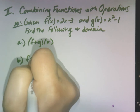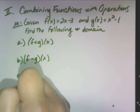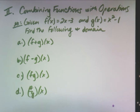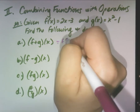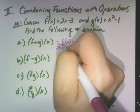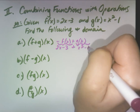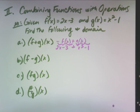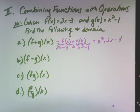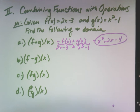For (f + g)(x), you just take f(x) plus g(x). So you take 2x − 3 and add it to x² − 1, then clean it up in logical mathematical order — exponents first. That gives you x² + 2x − 4. The domain of this is all reals — polynomials always have all reals as their domain.